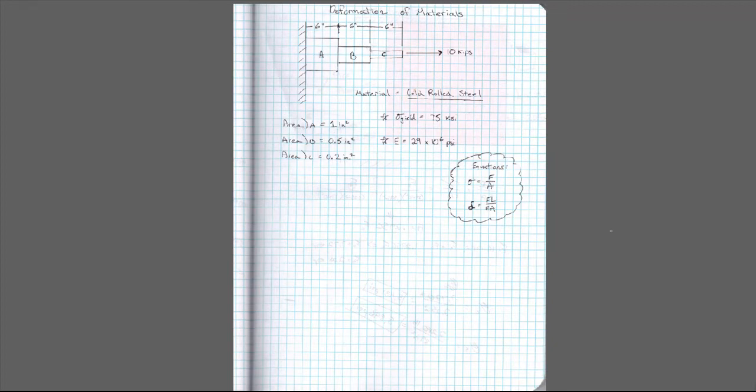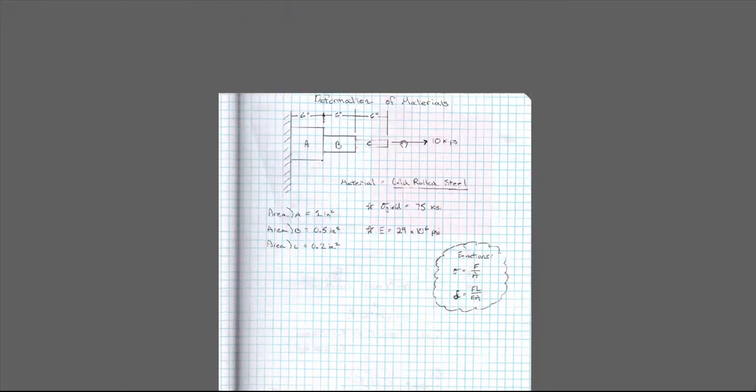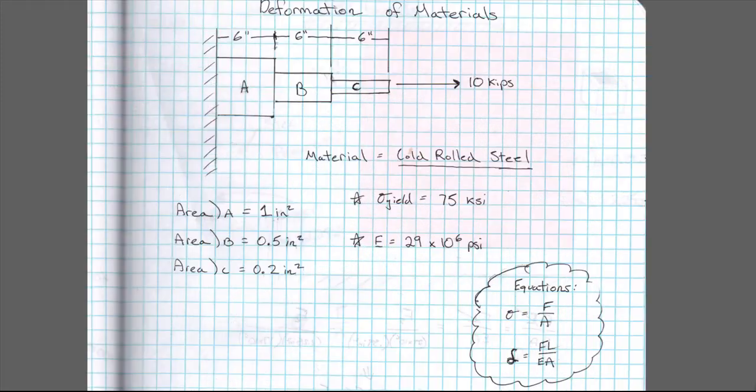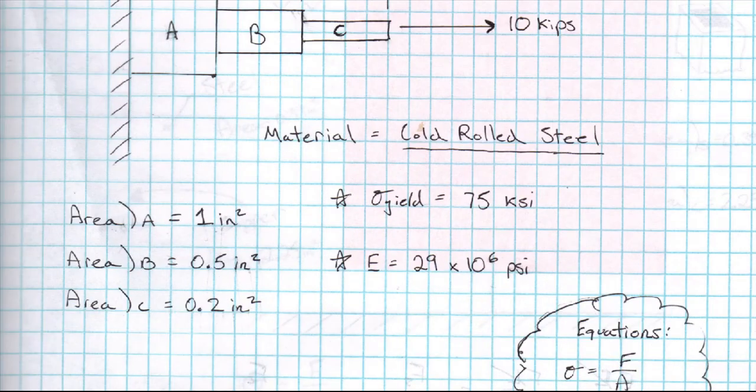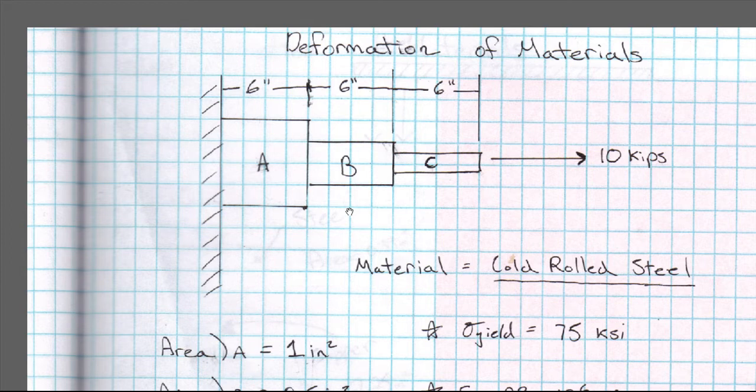Okay, this video is going to be focusing on the deformation of materials and I've just set up this kind of cascaded figure here. Let me zoom in so we can get a better view. The idea is that we have 10,000 pounds or 10 kips pulling on this shape.